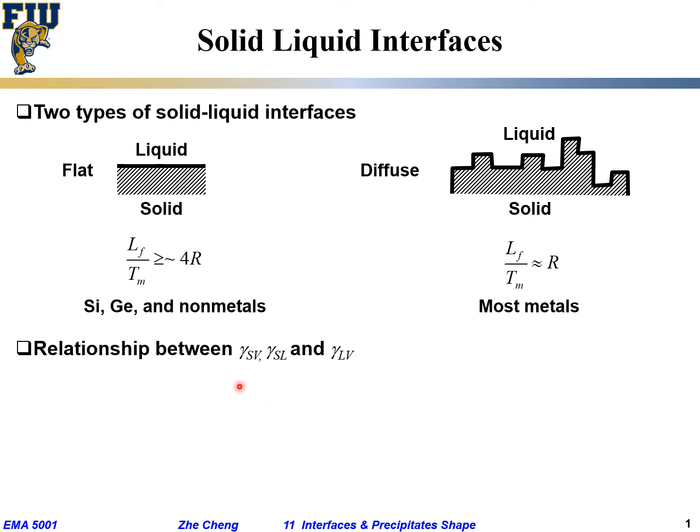One last thing we want to talk about would be the relationship between gamma_sv, the interfacial energy between solid and gas or vacuum, gamma_sl, the interfacial energy between solid and liquid, and gamma_lv, the interfacial energy between liquid and vapor. Quite often people find out gamma_sl is roughly half of the grain boundary energy, and earlier we said grain boundary energy is roughly one third of surface energy.